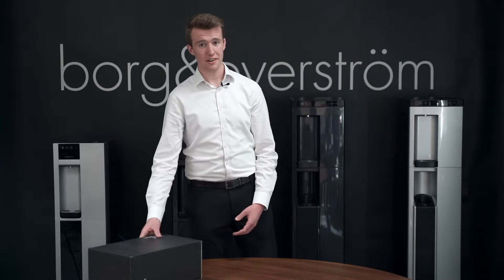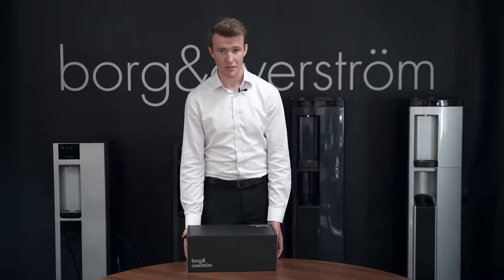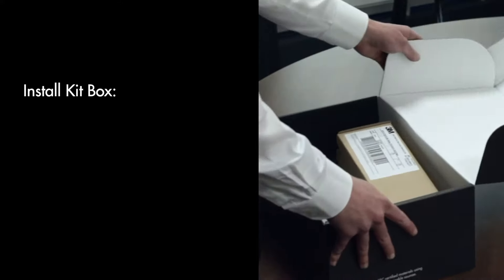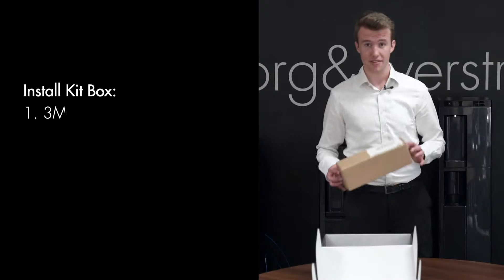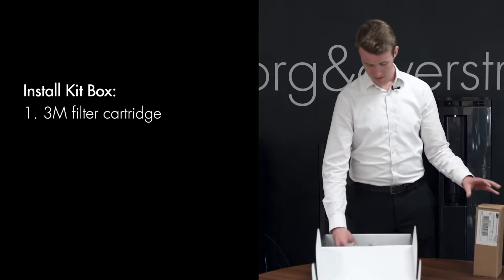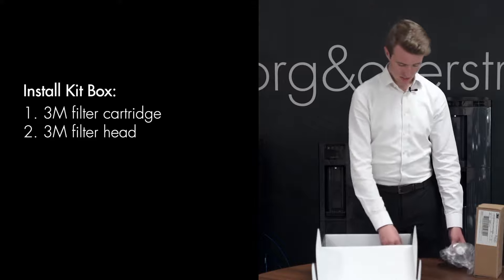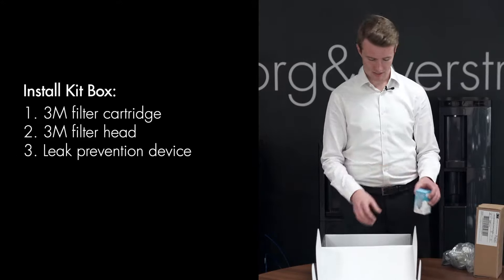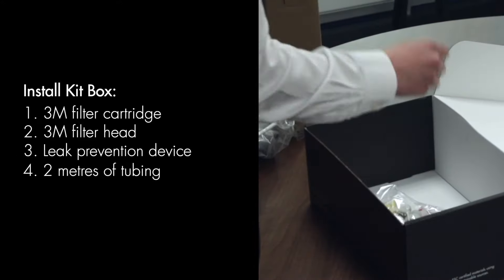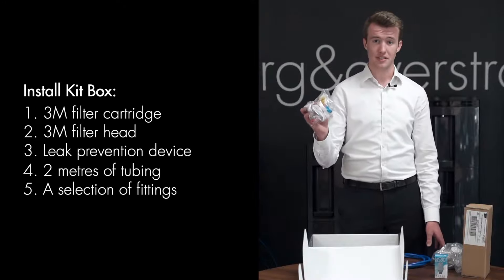In our final box is our install kit. This will vary depending on which unit you order, however it will include everything you need to connect your dispenser to the mains water supply, including the 3M filter cartridge, 3M filter head, the water block leak prevention device, your blue John Guest tubing, and then the various other fittings that you'll need.